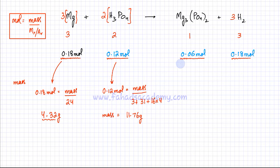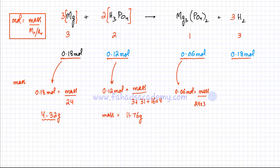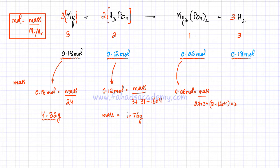For magnesium phosphate: 0.06 moles. The MR is 24 × 3 (three magnesiums), plus two PO₄ groups: each PO₄ is 31 + (16 × 4) = 95, multiplied by 2. So mass = 0.06 × (72 + 190) = 0.06 × 262 = 15.72 grams. That's the mass of magnesium phosphate produced.